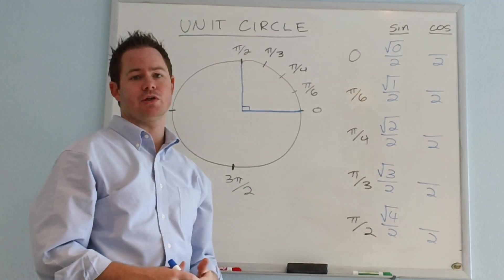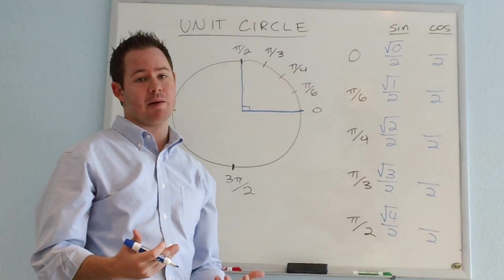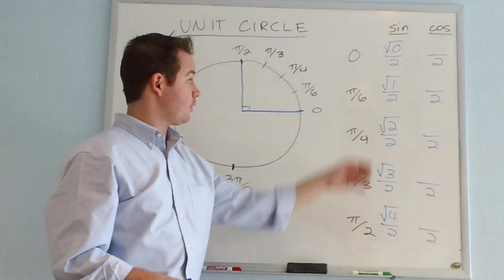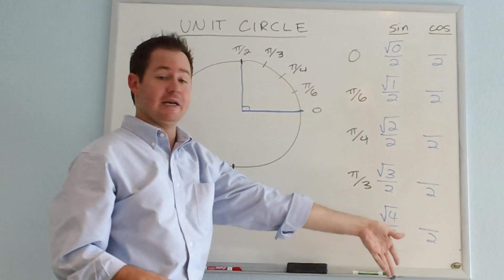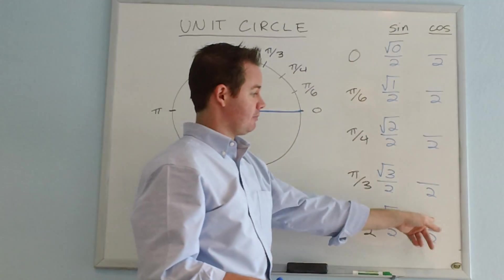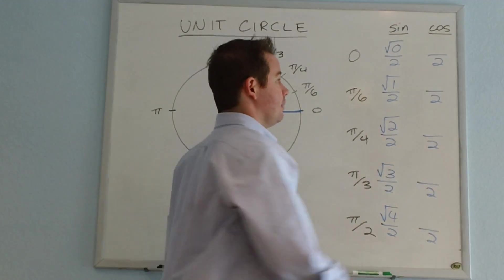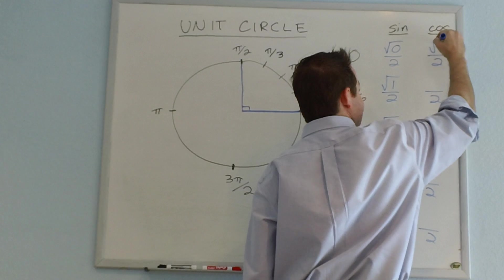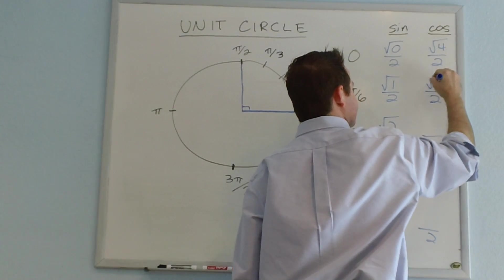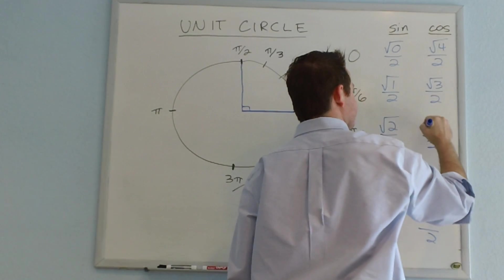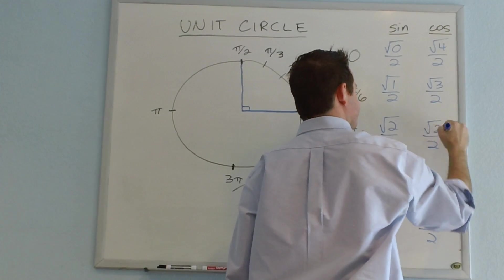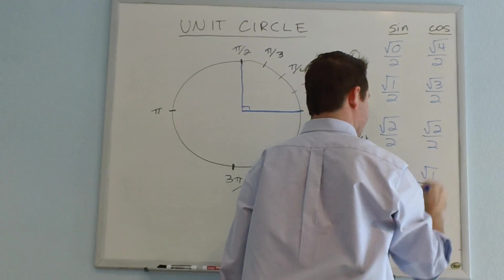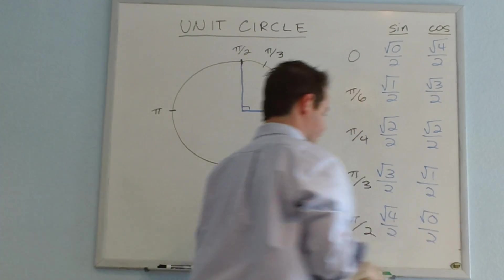Your cosine values are going to do exactly the opposite. You're going to start with 4 and count your way down — or you can start with 0 at the bottom and count your way up — but either way it's going to look like this: square root of 4, root 3, root 2, root 1, and root 0.